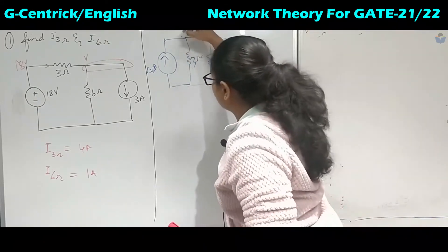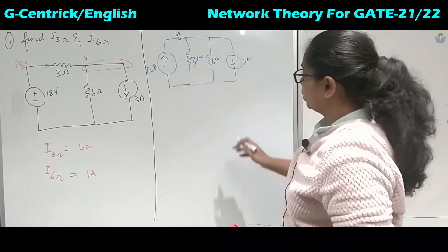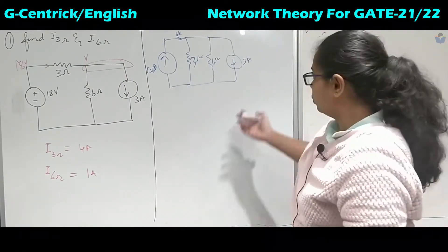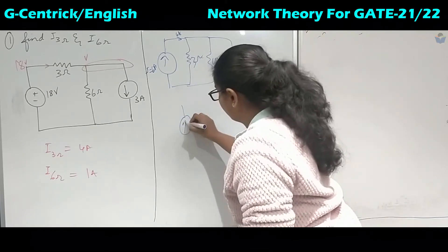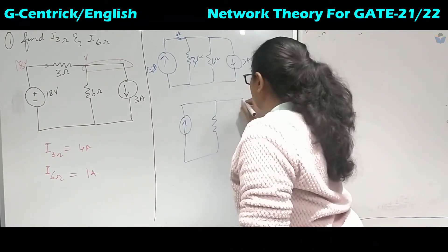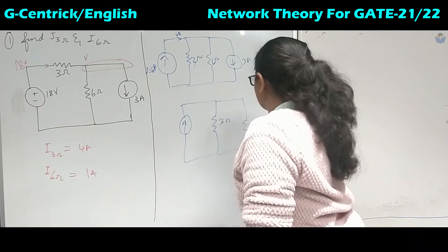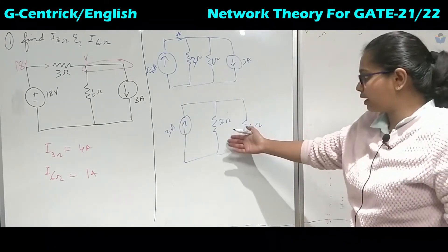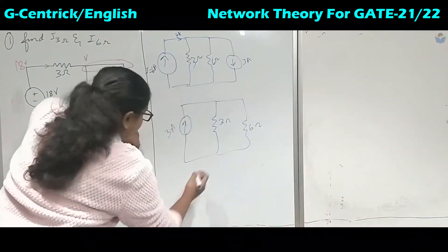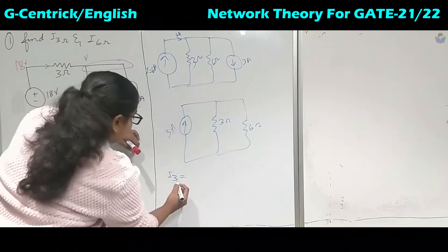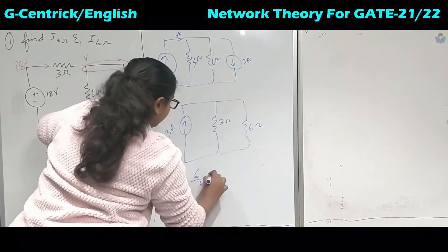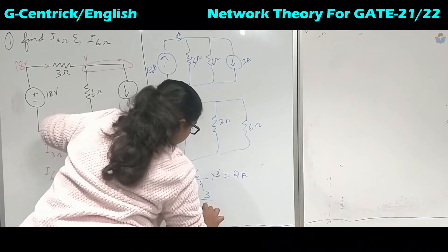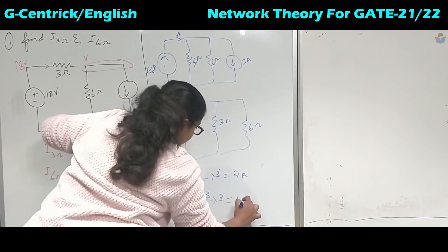We have two current sources: 6 A and 3 A. Since 6 A is the larger value, we combine them into one current source of 6 − 3 = 3 A. Now applying the current division rule: I₃Ω = [6 / (3 + 6)] × 3 = 2 amperes, and I₆Ω = [3 / (3 + 6)] × 3 = 1 ampere.